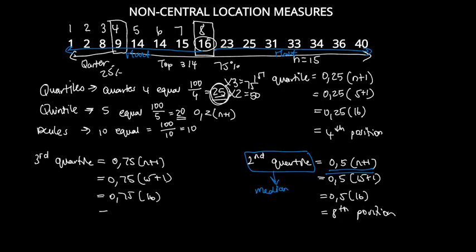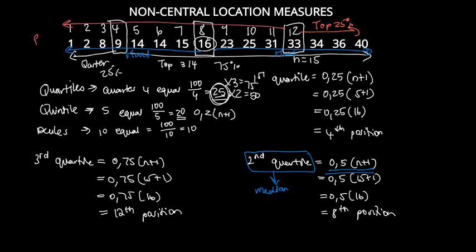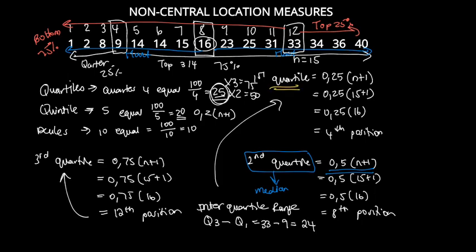That gives us 0.75 multiplied by 16, which equals 12. The third quartile is at the 12th data value, which is 33. This value separates the top 25 percent from the bottom 75 percent. The interquartile range is simply the third quartile minus the first quartile using actual data values: 33 minus 9 gives an interquartile range of 24.